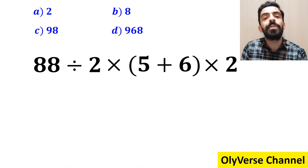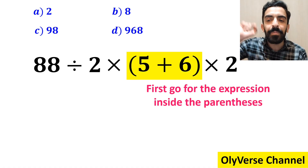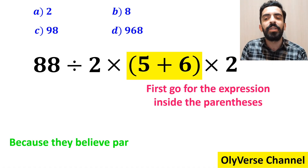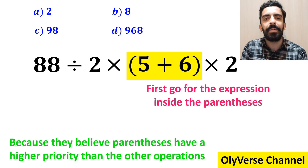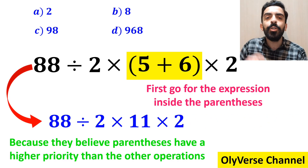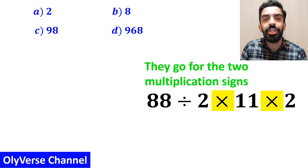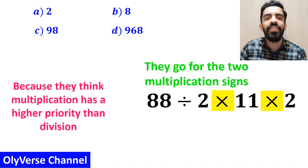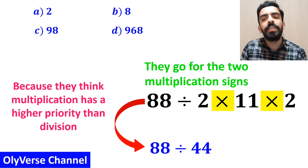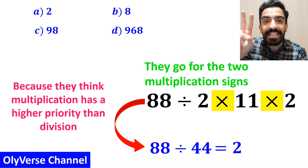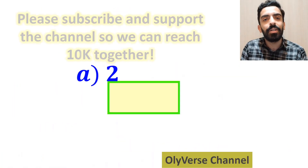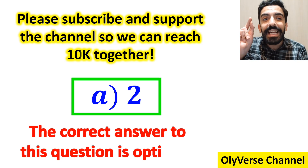Many people, when trying to solve this question, first go for the expression inside parenthesis because they believe parenthesis have a higher priority than the other operations. So they simplify this expression to 88 divided by 2 times 11 and multiplied by 2. Then they go for the two multiplication signs highlighted in yellow, because they think multiplication has a higher priority than division. So they write 88 divided by 44, which gives them the answer 2, and they conclude that option A is correct.